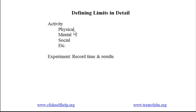Physical activity refers to things you do — bathing, dressing, housework, shopping, driving, standing, exercise, and so on. Mental activity refers to things that take concentration, such as reading or working on the computer. Social activity means time with people — in person, on the phone, via email, and so on.